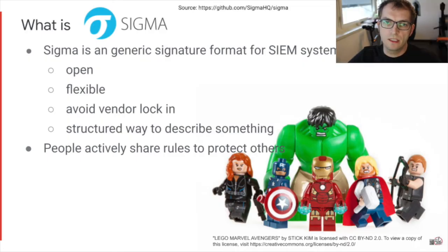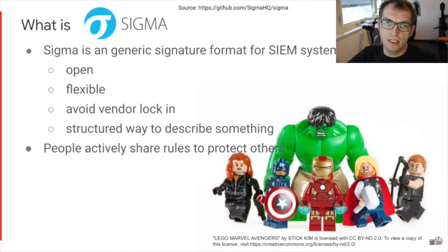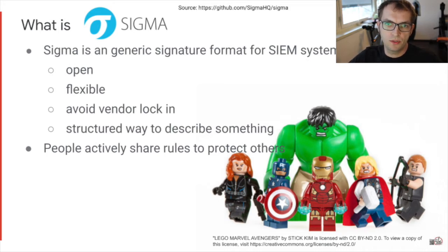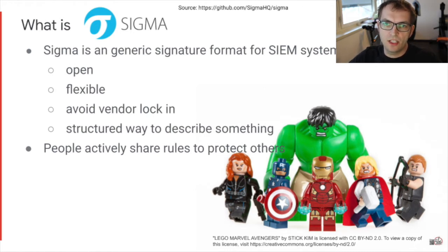Sigma is a generic signature format to add value to SIEM systems. It is mainly developed by Thomas Patzke and Florian Roth, and it is meant to be an open, flexible, and structured way to describe something. By being vendor independent, it also enables you to take your rules from one supported tool to another, or apply the same rules in different tools in your arsenal. There is a pretty active community of people actively sharing rules with the goal to protect others.